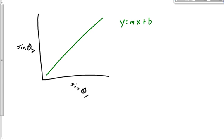So instead of being y equals mx plus b, it's going to be whatever's on my y-axis, sine theta 2, equals the slope times whatever's on my x-axis, plus the y-intercept. There won't be a y-intercept, or at least there shouldn't be a y-intercept, so the equation just becomes sine theta 2 equals the slope times sine theta 1.